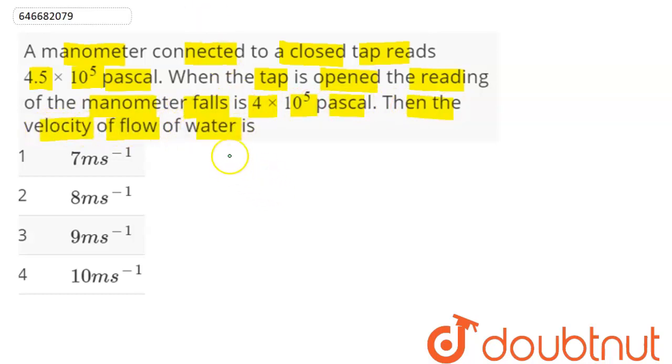By Bernoulli's equation we have p + ρgh + ½ρv² = constant. Hence,